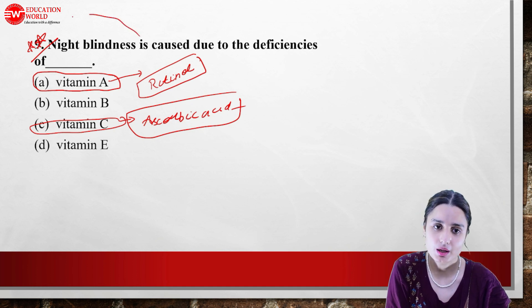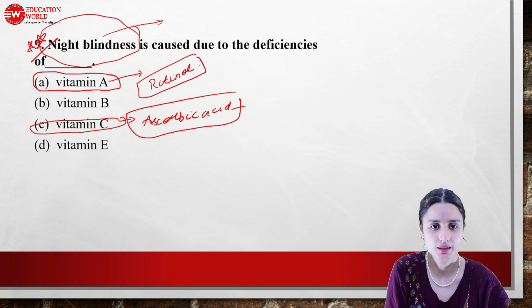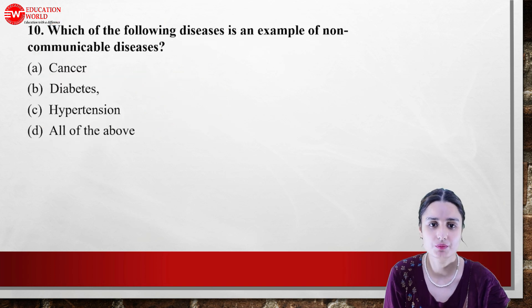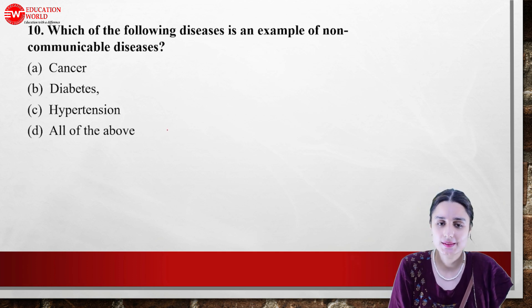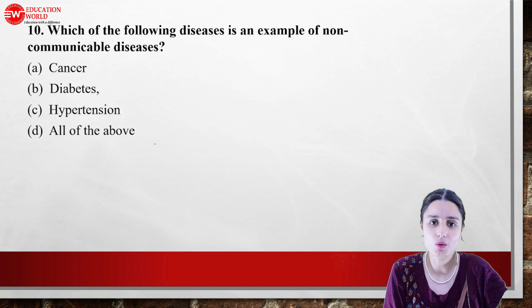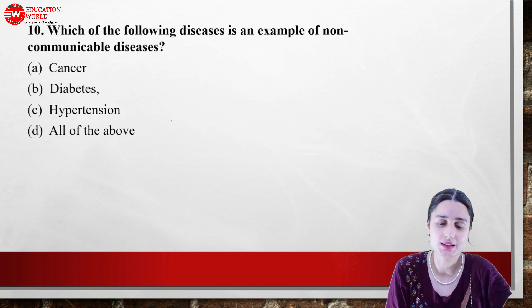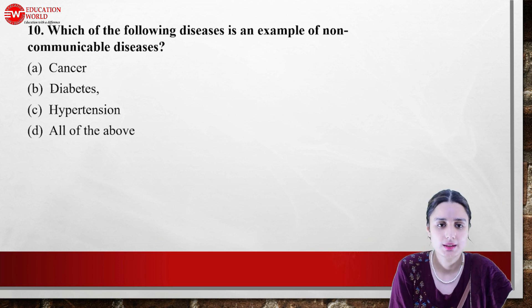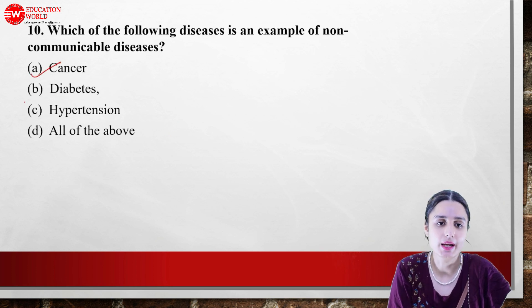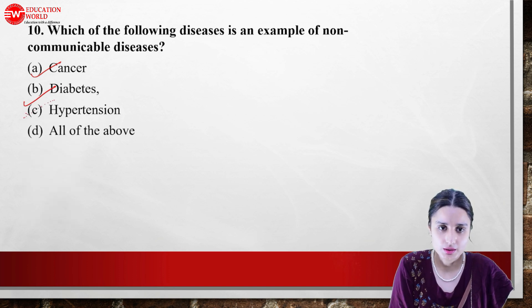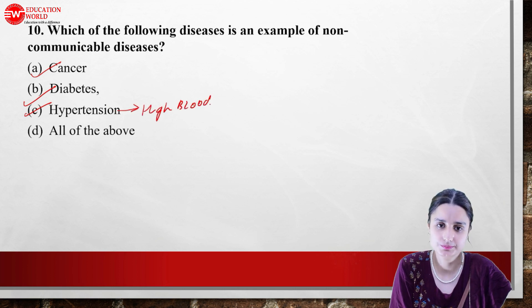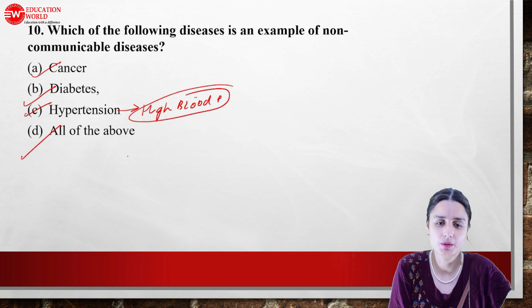Non-communicable diseases — which diseases are non-communicable? It means diseases that cannot transmit from one person to another. Cancer, diabetes, and hypertension are examples of non-communicable diseases. The answer is that all of these are diseases that do not transmit.